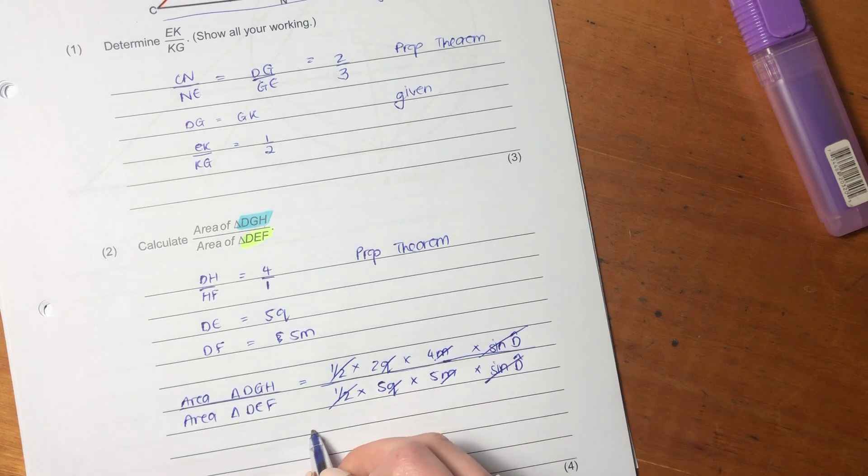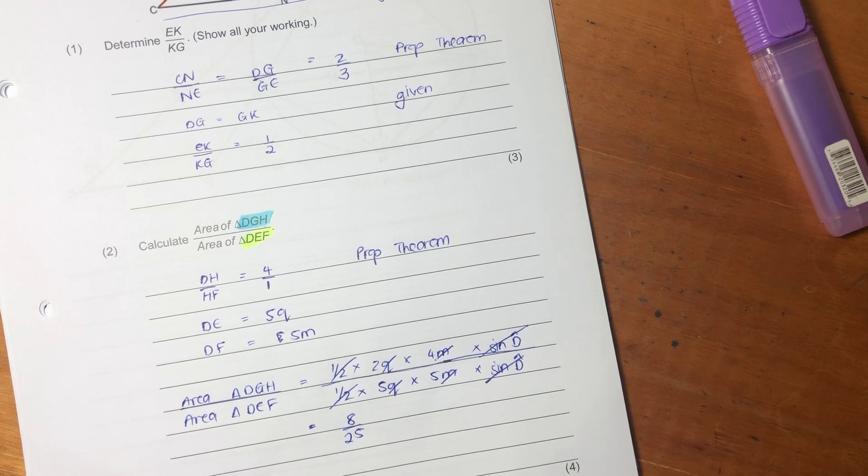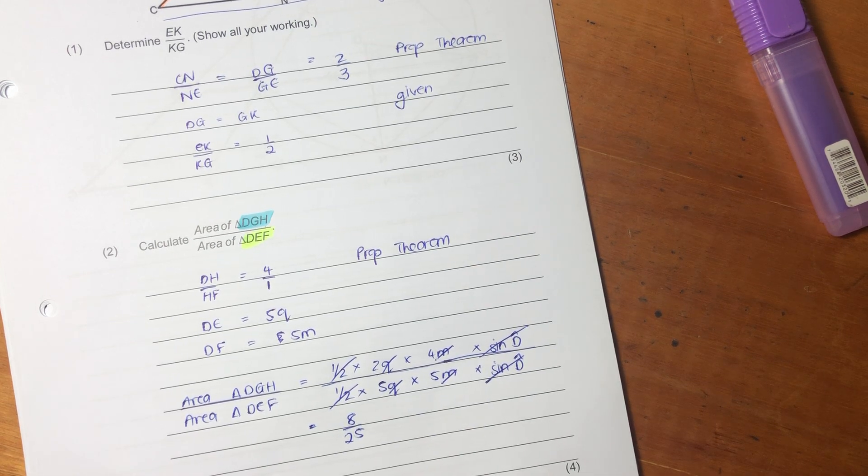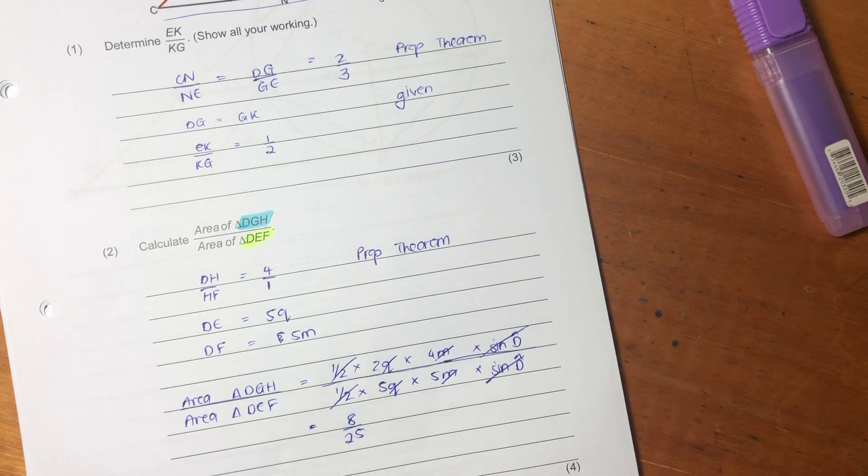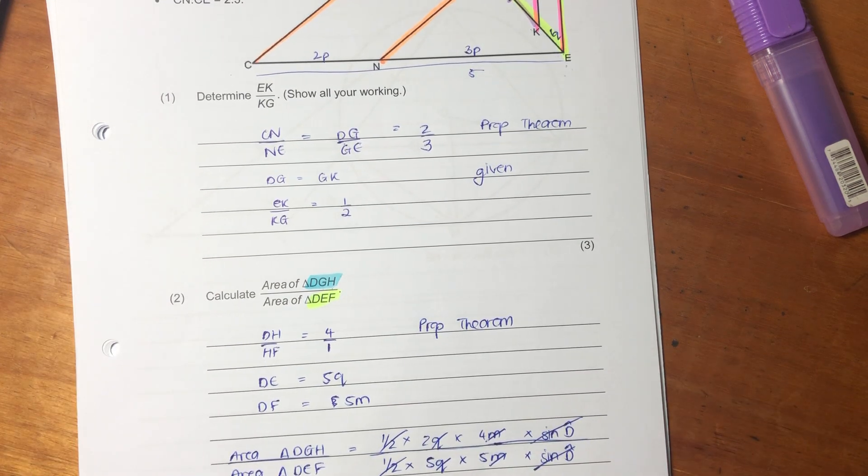So let's now simplify this. That's going to be 8 over 25. So that's our final answer there, 8 over 25. So that's the end of this video. In the next video, I'm going to do 8B, and we'll see whether we revisit our proportionality theorem. I hope that was helpful, guys. Cheers.